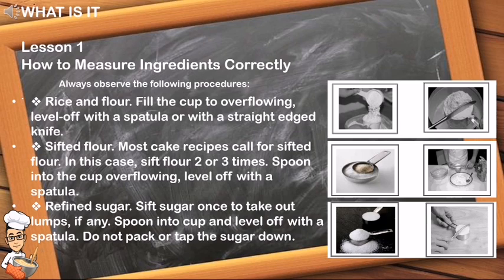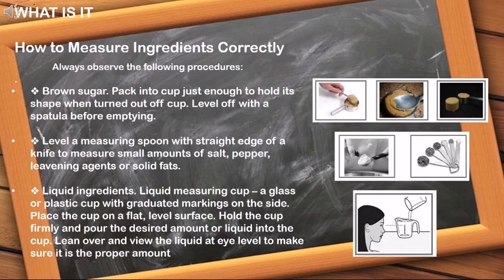Do not pack or tap the sugar down. Brown sugar: pack into cup just enough to hold its shape when turned out of the cup, then level off with a spatula before emptying. Level a measuring spoon with the straight edge of a knife to measure small amounts of salt, pepper, leavening agents, or solid fats.